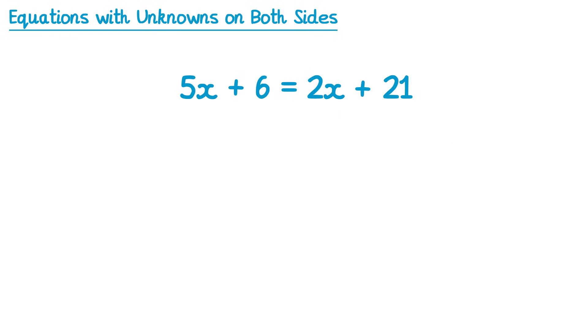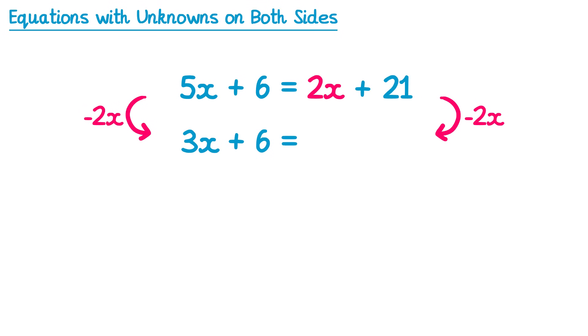In order to solve this equation, the first thing we're going to do is eliminate the term on the right-hand side that has the unknown — so that's this 2x here. We'll do this by subtracting 2x from both sides of the equation. When we subtract 2x from the left-hand side, you only subtract the 2x from the 5x, and not the 6. So it's 5x subtract 2x, which is 3x, and then we have plus 6, which doesn't change. On the right side, we do 2x subtract 2x, which is 0, so those terms cancel out and we're just left with 21.